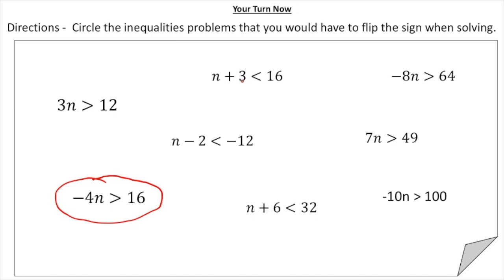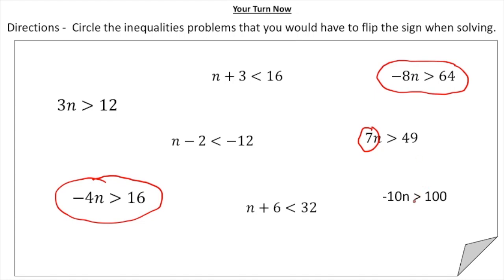This one: n plus 3 — we subtract 3, so we leave that the way it is. Another one: we add 2 to both sides, so we leave it the way it is. n plus 6 is less than 32 — we subtract 6, leave it the way it is. How about negative 8n is greater than 64? We divide by negative 8, so we have to flip the sign. Then 7n is greater than 49 — the coefficient is positive, so we leave it. Last but not least, negative 10n is greater than 100 — the coefficient is negative 10, so we divide by negative 10 and flip the sign.